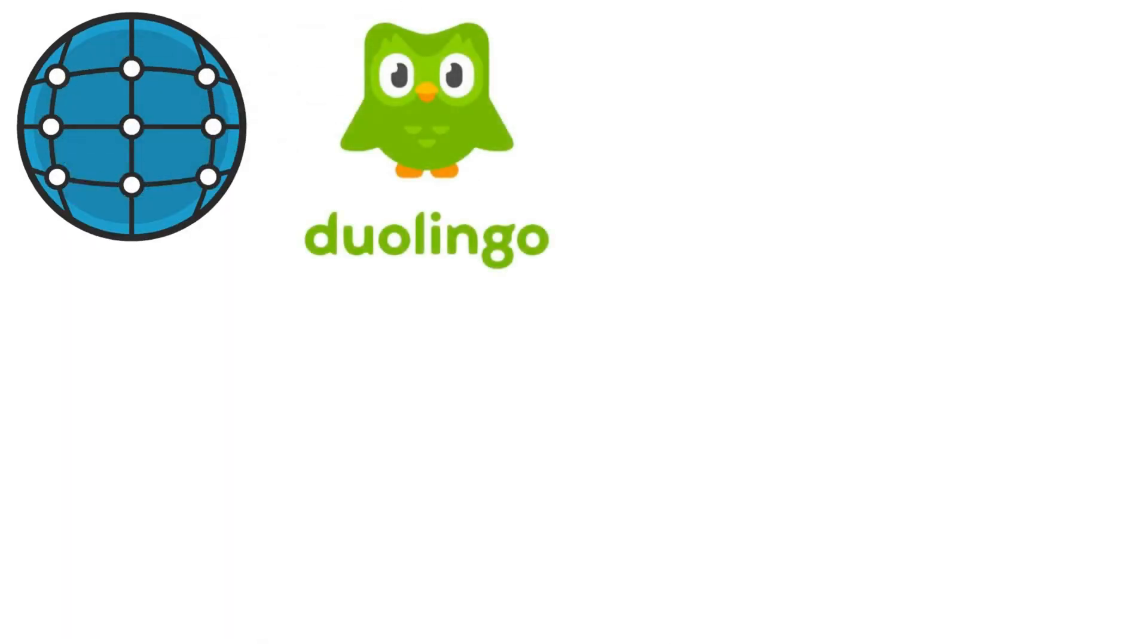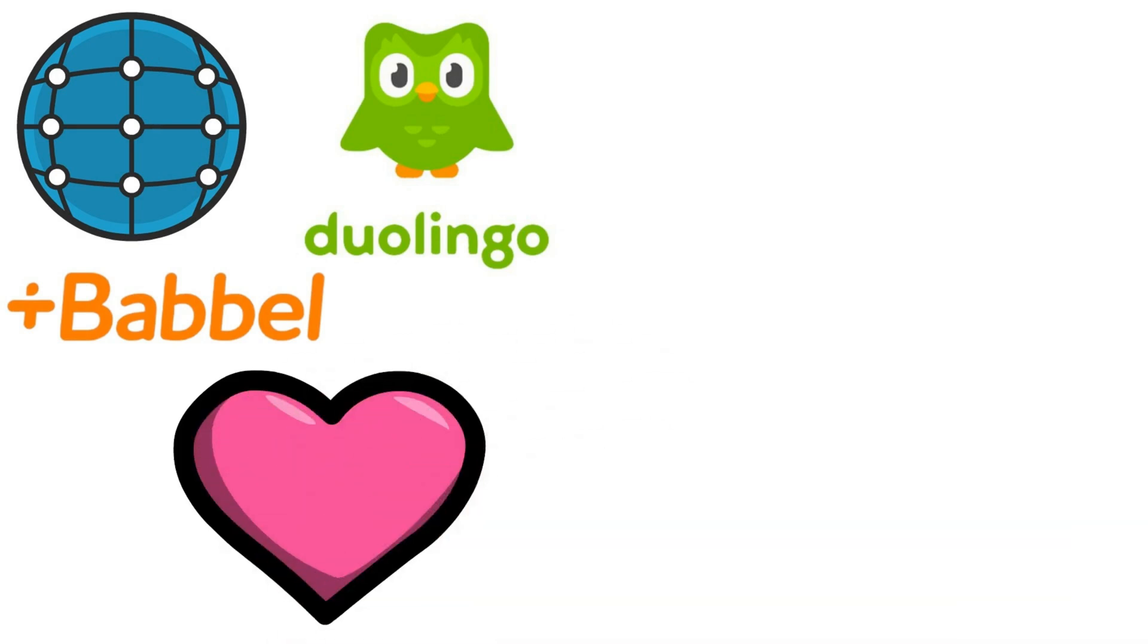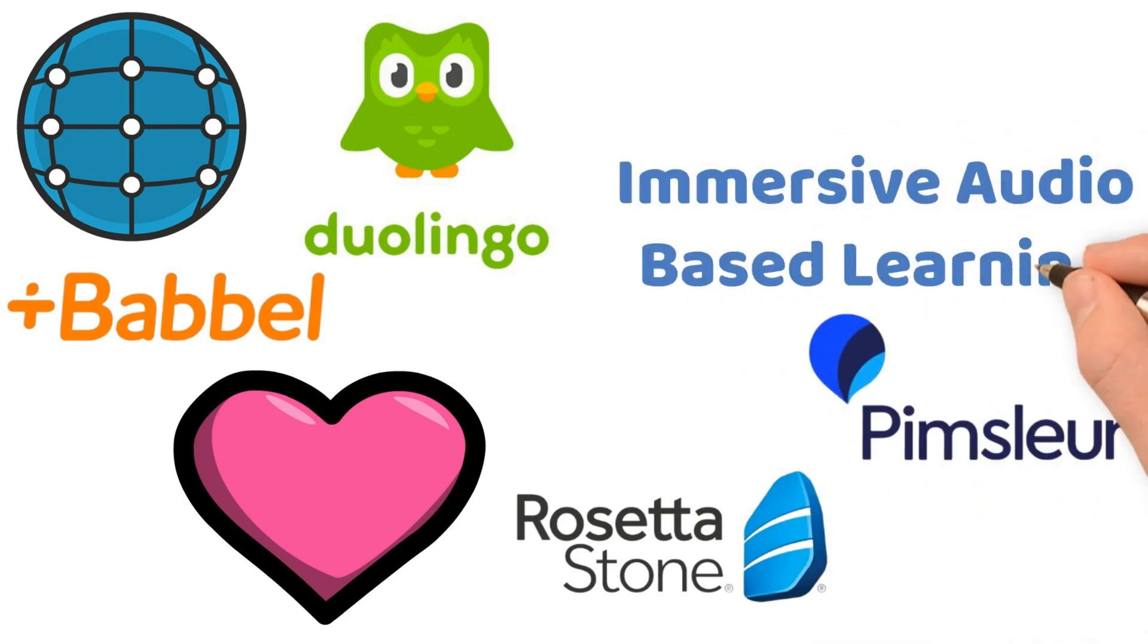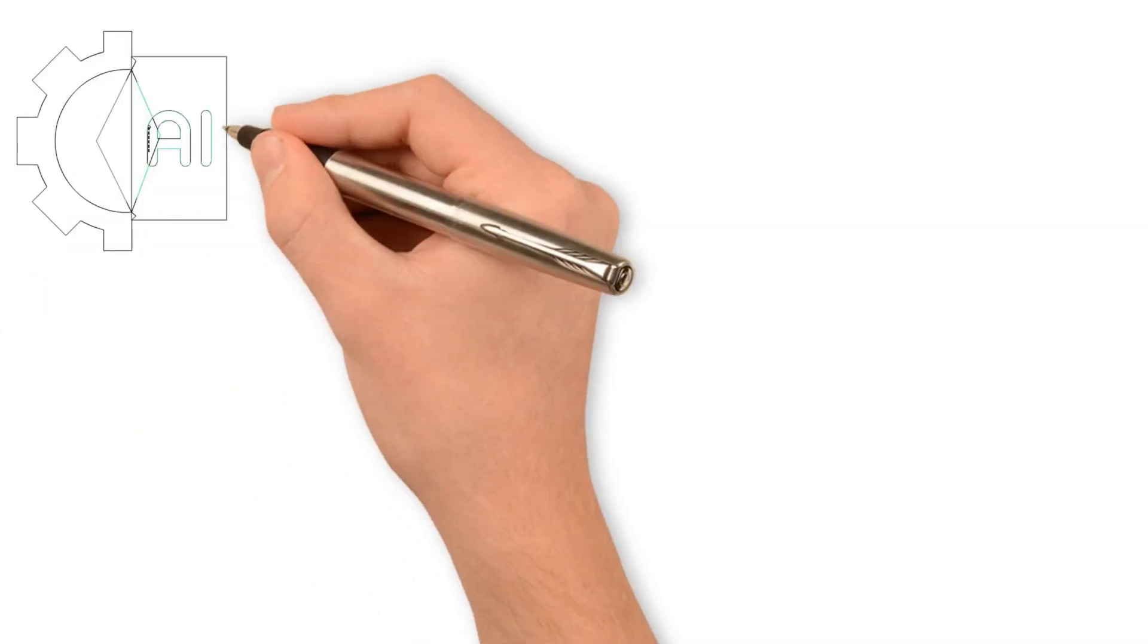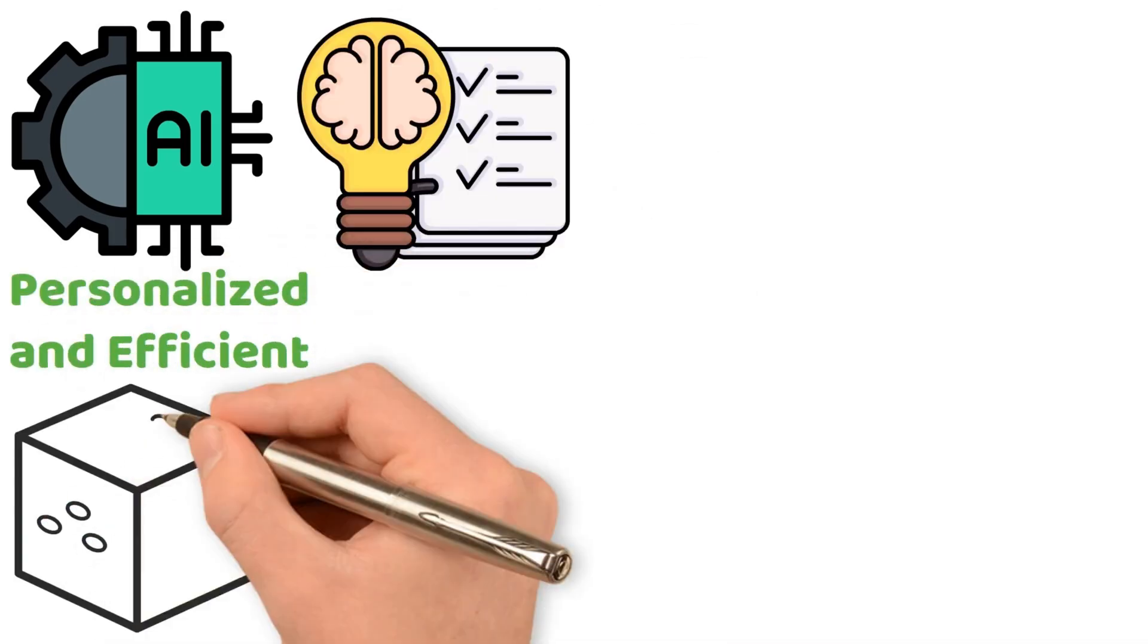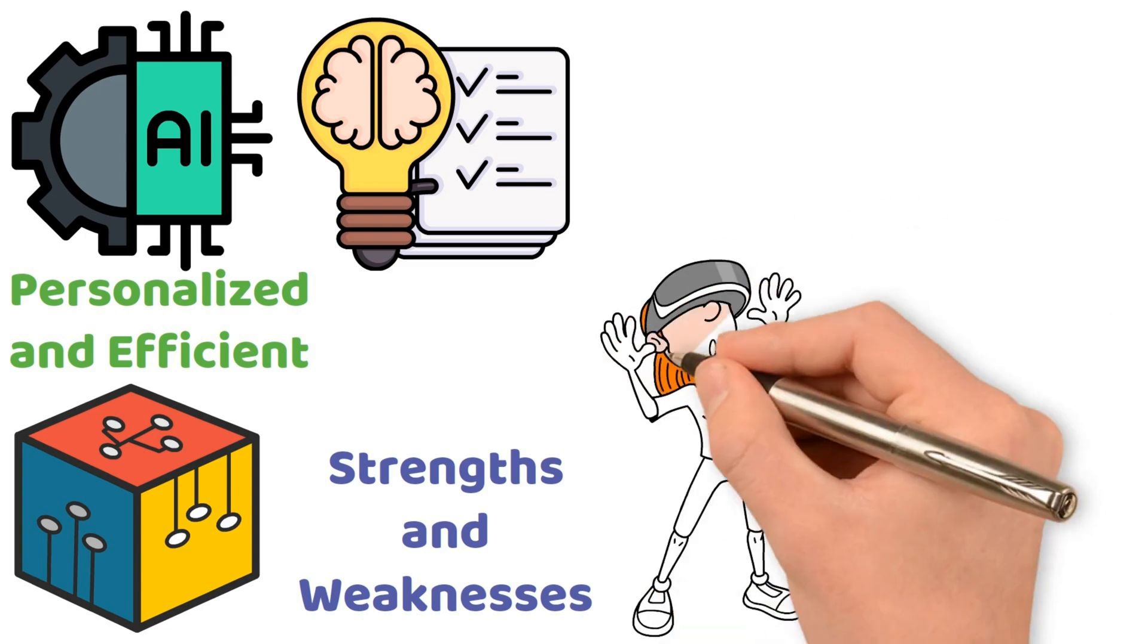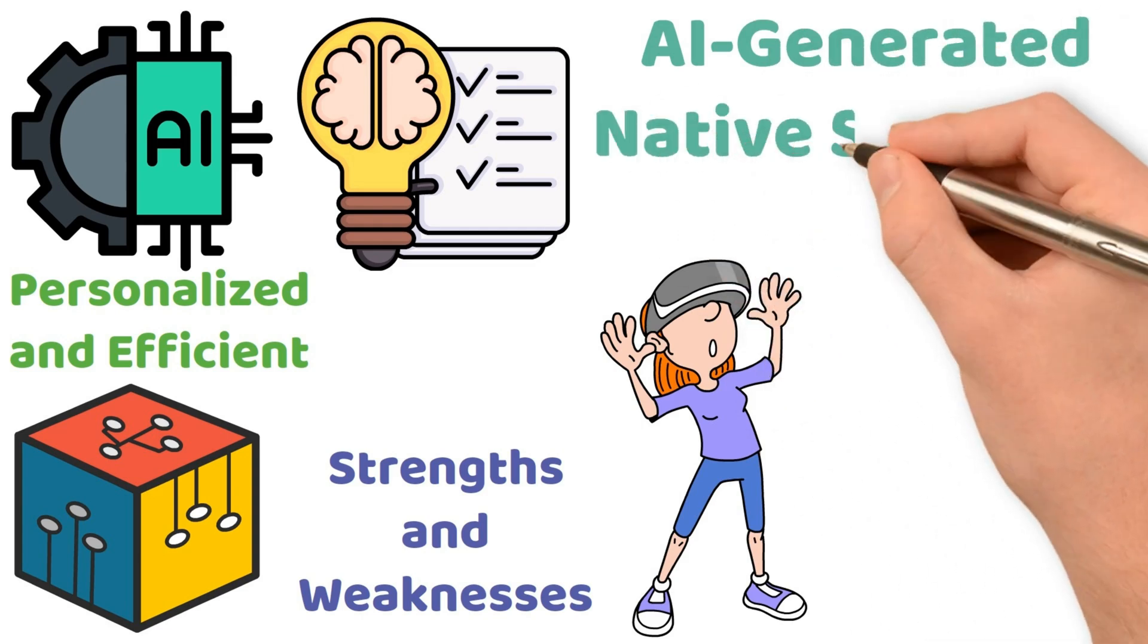Apps like Duolingo and Babbel offer a fun and interactive way to learn languages at your own pace, while tools like Rosetta Stone and Pimsleur focus on immersive audio-based learning to help you master pronunciation and listening skills. AI is already transforming how we learn languages and is expected to make the process more personalised and efficient. Tools powered by AI can analyse your strengths and weaknesses, creating a learning path tailored just for you, while immersive VR simulations allow you to practice conversation skills with AI-generated native speakers.